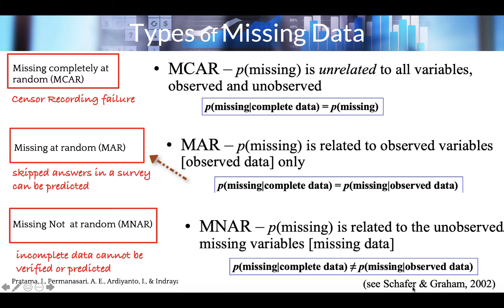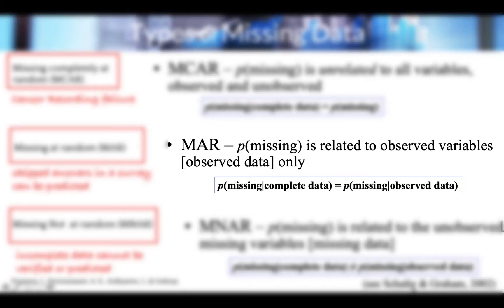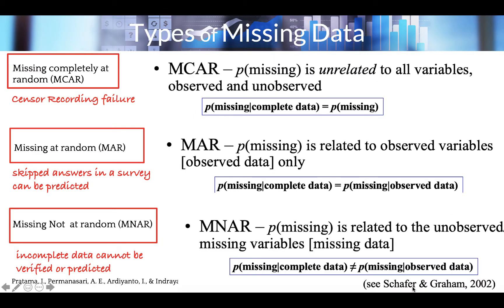The second type is Missing At Random (MAR): a variable is missing at random if the probability of missingness depends only on available information. In an income survey, for instance, male respondents tend to skip answers about salary. The formula is: P(missing | complete data) = P(missing | observed data).